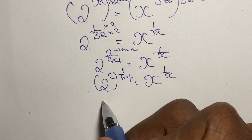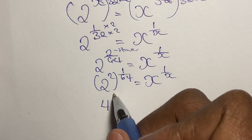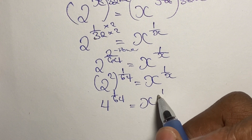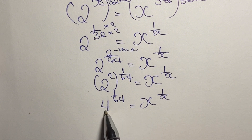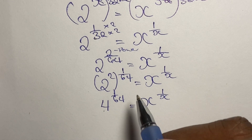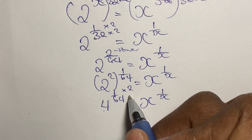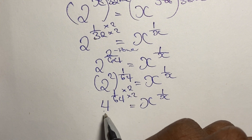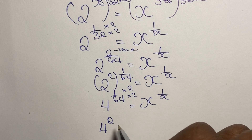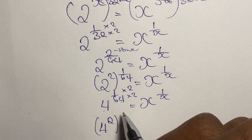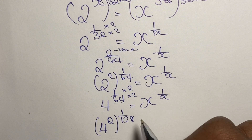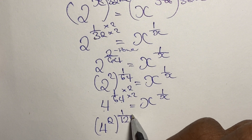2 squared gives us 4, so we have 4 to the power of 1 over 64 equal to x to the power of 1 over x. We continue this approach until our base equals the denominator of the exponent. Multiplying the fraction in the exponent by 2 again, we get (4 squared) to the power of 1 over 128, equal to x to the power of 1 over x.